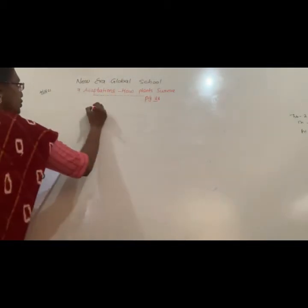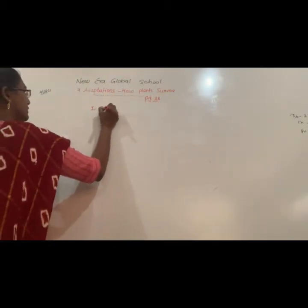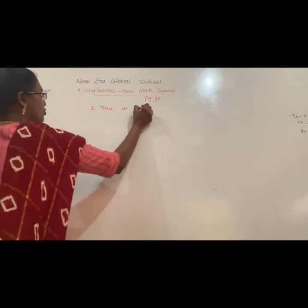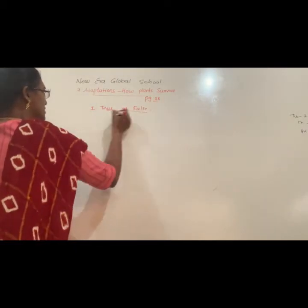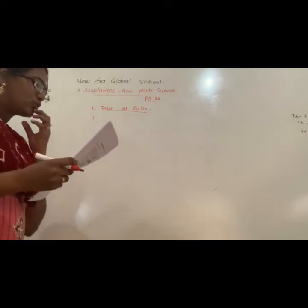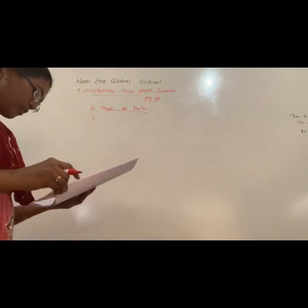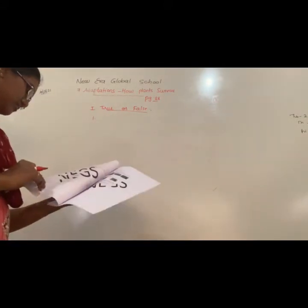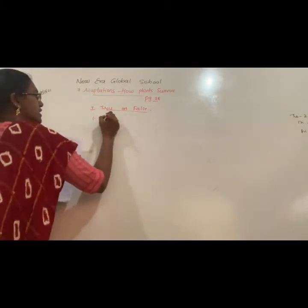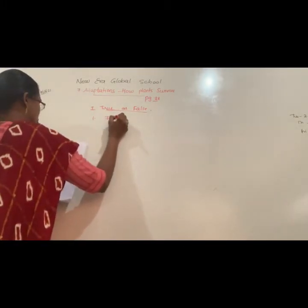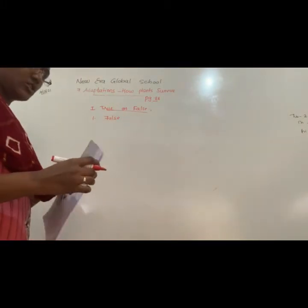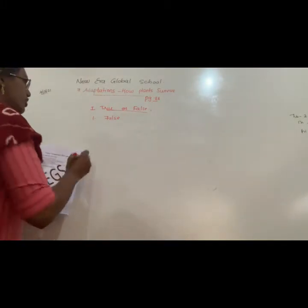The first one: mangroves are trees found in the desert regions. Is it right? No, it is false. Mangroves are found in swampy areas, so the statement is false.